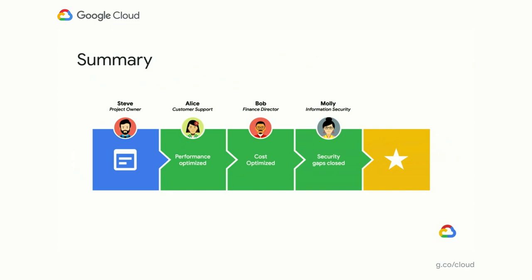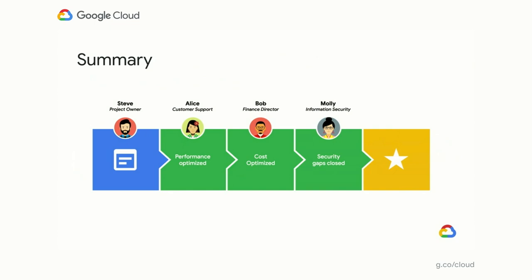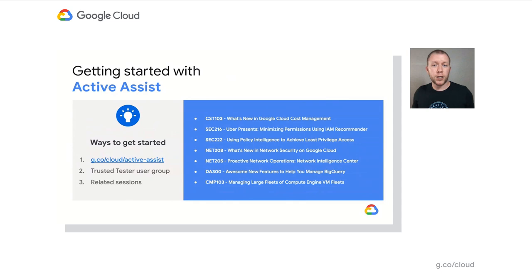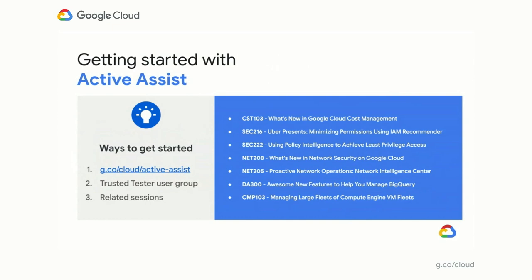To recap, we looked at several examples of how Active Assist can help improve your workload's performance, availability, and scalability, optimize your cloud infrastructure cost, and improve your security posture. To get started with Active Assist, we encourage you to visit our website and Recommendation Hub in Cloud Console to see if there are some recommendations already waiting for you. Some of the features that we highlighted today are only available in limited preview. If you are interested in getting early access to all the new features as they get developed, we encourage you to join our Active Assist trusted tester group, which is linked from our website. And finally, check out these Cloud on Air sessions for deeper dives into some of the features that we talked about. Thank you so much for joining us today.